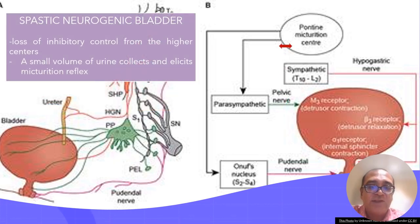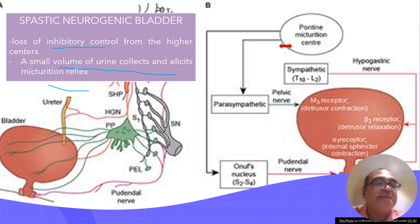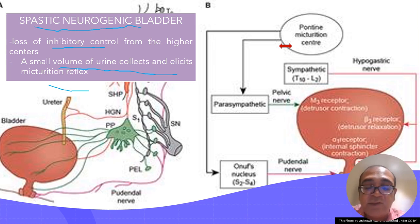The next abnormality involves a lesion in the brain causing loss of inhibitory control. When there is loss of inhibitory control, even a small volume of urine collects and elicits a micturition reflex. This is known as a spastic neurogenic bladder — a small volume of urine collects and triggers a micturition reflex.